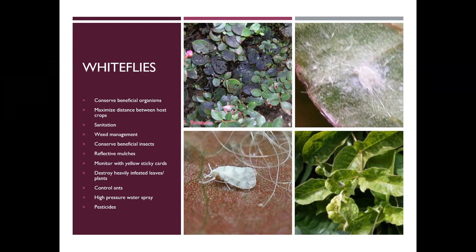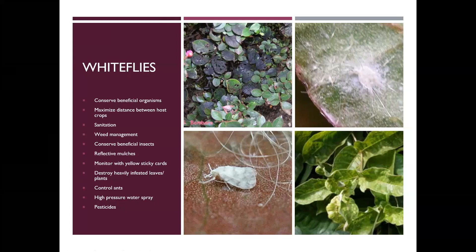The same sorts of controls apply as we've been talking about for aphids and mealybugs. One additional option for vegetable gardens is reflective mulch — it's a shiny flexible material you put down over the plot, poke holes in, and plant your vegetables through. What it does is reflect light onto the underside of the leaf, making it a less habitable location for whiteflies, aphids, or mealybugs, so it can help cut down on those populations.